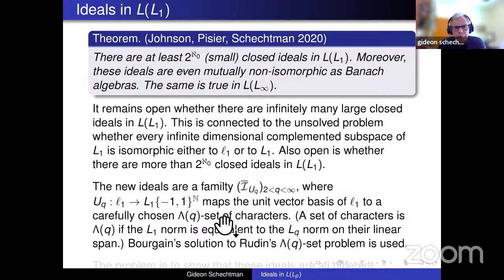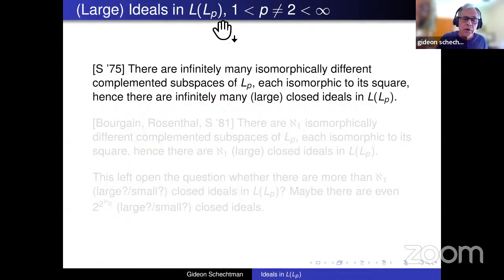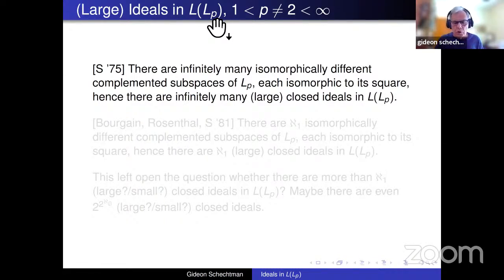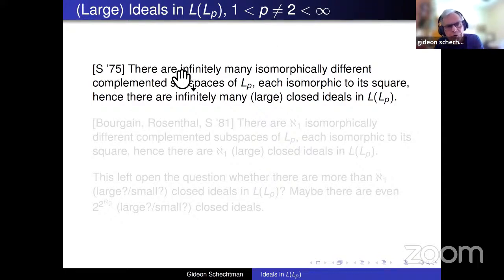Now I want to go to ideals in L(Lp) in the reflexive range, with p ≠ 2. For p = 2 there is only one non-trivial closed ideal — the compact operators, same as the operators on little l2. So I'm talking about p different from 2, which already shows there is a problem in constructing such ideals.